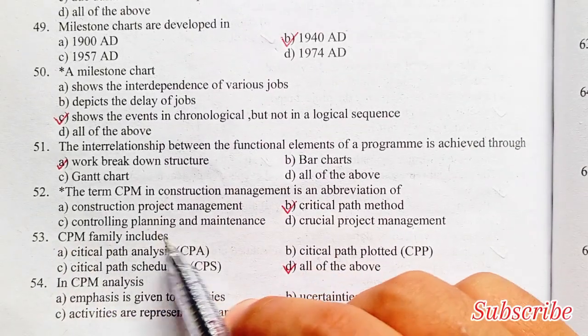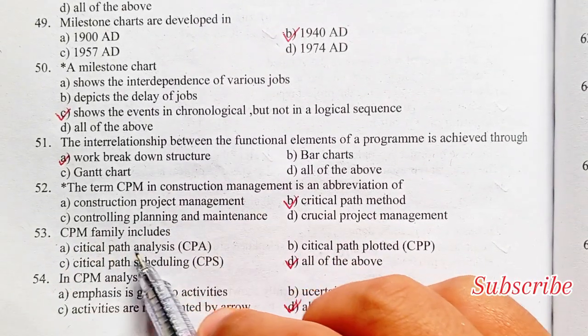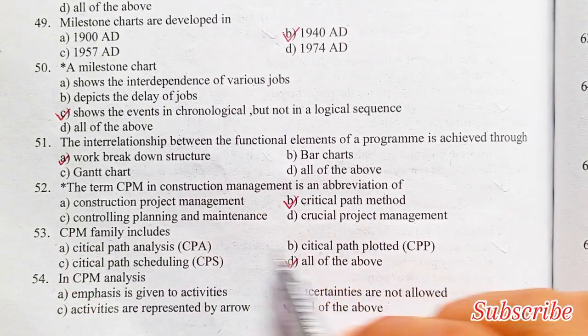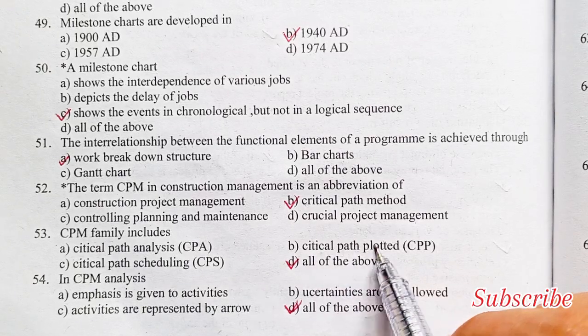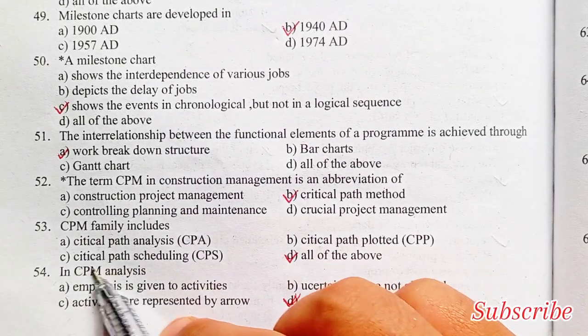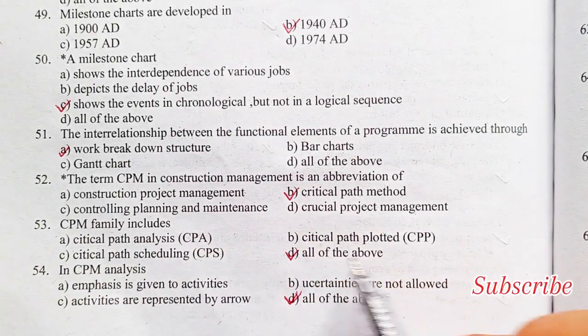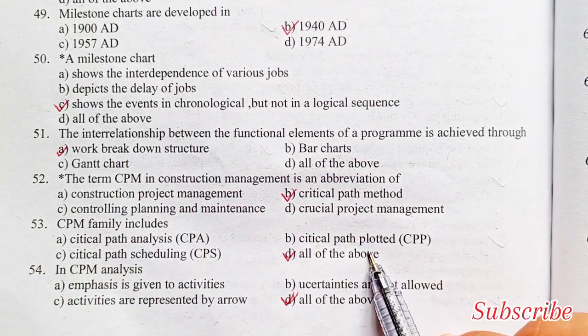The CPM family includes: critical path analysis (CPA), critical path planning (CPP), critical path scheduling (CPS), all of the above. Option D is the right answer — all of the above.